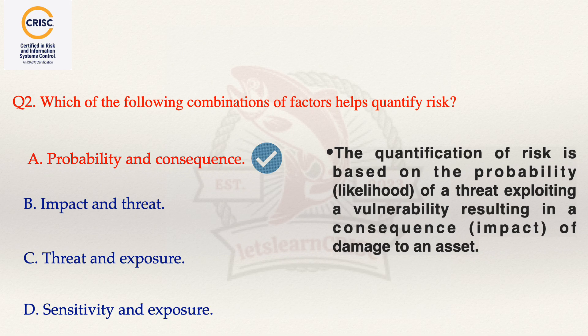Moving next to option C, that is threat and exposure. This option is also incorrect because threat is anything — for example, an object, substance, or human — that is capable of acting against an asset in a manner that can result in harm, whereas exposure is the potential loss to an area due to the occurrence of an adverse event. Threat and exposure are not sufficient to quantify the risk.